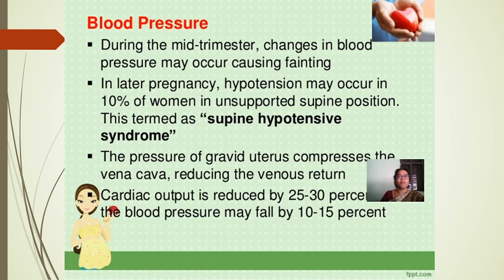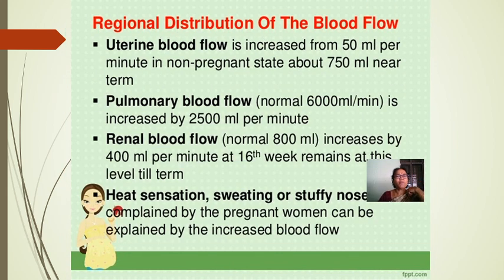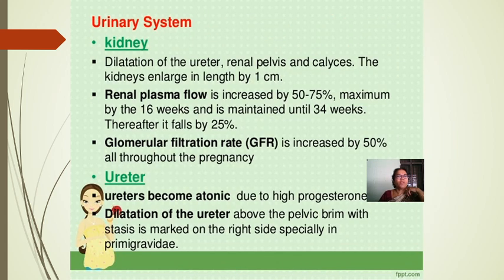Blood pressure: during mid-trimester, blood pressure changes may cause fainting. In later pregnancy, hypotension may occur in 10% of women in the unsupported supine position — termed supine hypotensive syndrome — as the gravid uterus compresses the vena cava, reducing venous return, and cardiac output is reduced by 25–30%; blood pressure may fall by 10–50%. Regional blood flow: uterine blood flow increases from 50 ml/min in non-pregnant state to about 750 ml/min near term. Renal blood flow increases by 400 ml/min at 16 weeks.